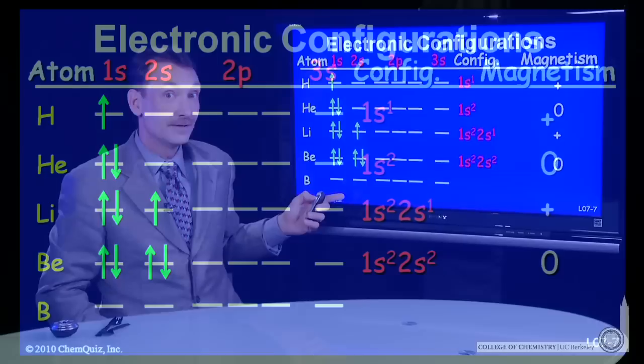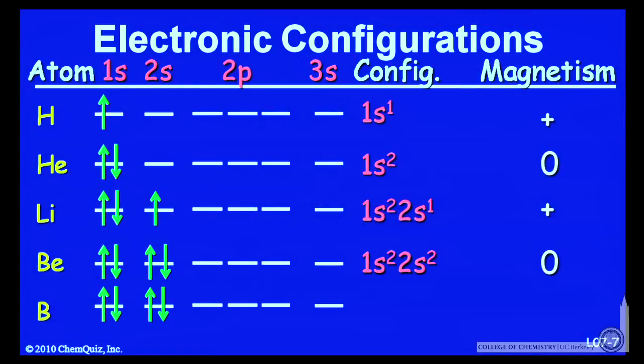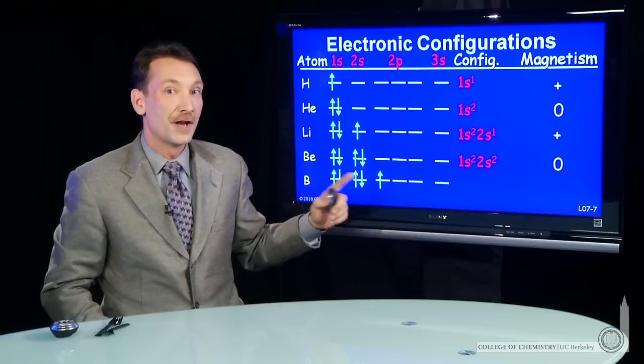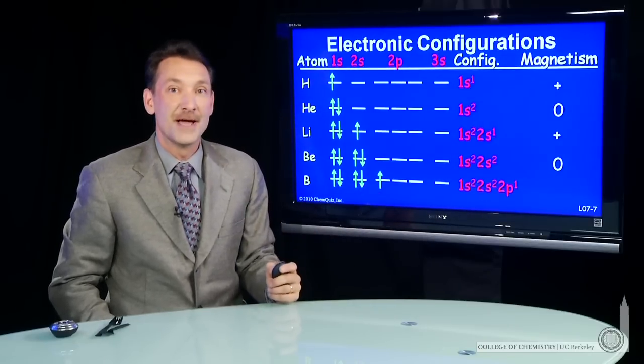Whereas boron with yet another electron, five total electrons, will go into the 2p orbital, the first available 2p orbital, with an unpaired spin and be magnetic.